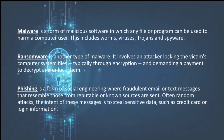Malware is a form of malicious software in which any file or program can be used to harm a computer user. These include worms, viruses, trojans and spyware. Ransomware is another type of malware — it involves an attacker locking the victim's computer system files, typically through encryption, and demanding a payment to decrypt and unlock them. Phishing is a form of social engineering where fraudulent emails or text messages resembling those from reputable or known sources are sent, often as random attacks. The intent is to steal sensitive data such as credit card or login information.